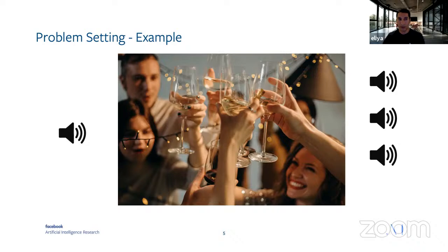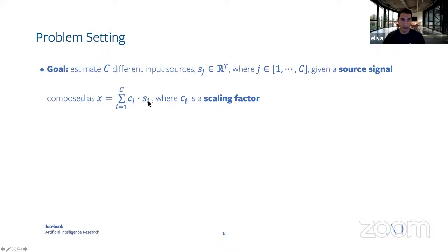Our goal is to estimate C different input sources S_j, where j goes from one to C, given a mixed source signal X that is composed from multiple speakers S_i, where C_i is the scaling factor for each speaker. This is a fully supervised case where our dataset consists of tuples of the input mixed signal and the ground truth for each one of the speakers. No speaker identity is provided in this dataset.